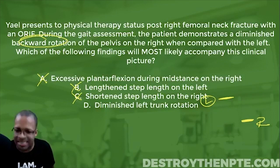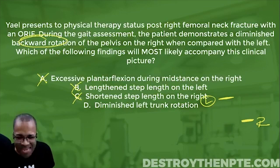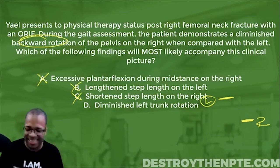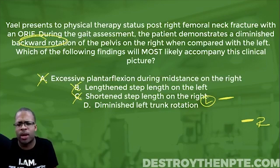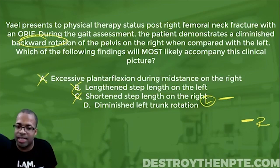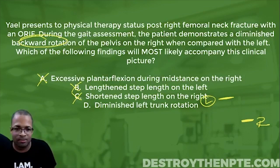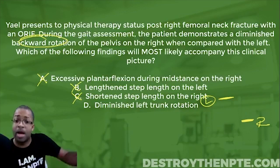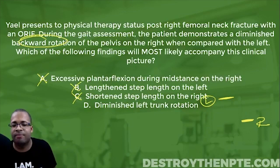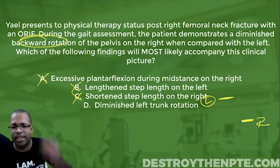If the patient can't go into right terminal stance, they can't really go into left trunk rotation. So D fits — diminished left trunk rotation is the answer. This one is tough and you've got to spend time with it. To be confident on these gait questions, you must understand normal gait. You have to know: if my right leg is going into terminal stance, what is my trunk doing? What is my other leg doing? That understanding is what allows you to make sound clinical judgments.